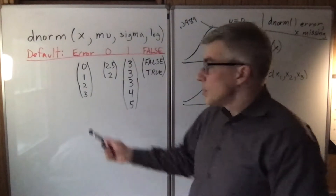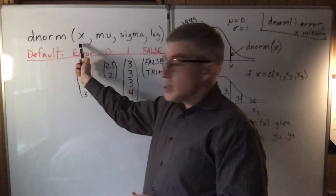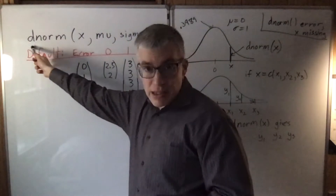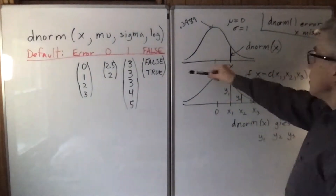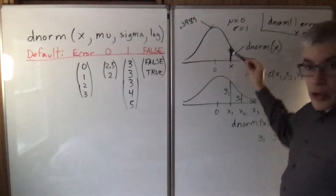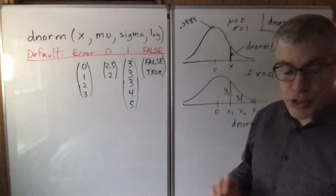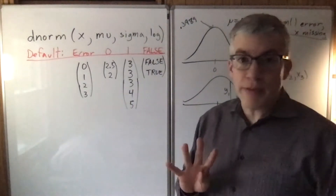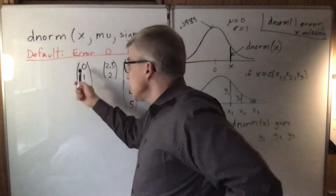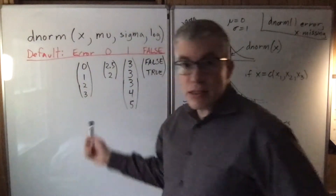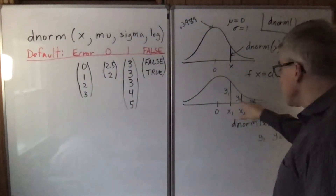In R, the dnorm function gives you the density, meaning the height of a normal curve. It takes up to four arguments. The first one is the x values — like where do you want to know the heights.